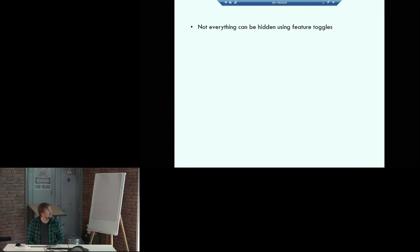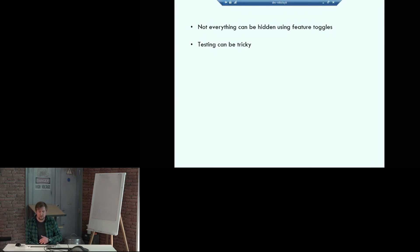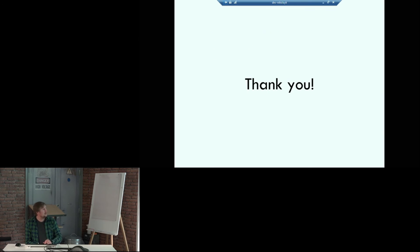Other thoughts: not everything can be hidden using feature toggles. Stuff like complex refactoring or large tasks which span across different areas of code may be challenging to hide from users behind a feature toggle. Testing can be tricky because with lots of feature toggles, it's not entirely obvious which tests to maintain and which combinations of feature toggles to test. And a cultural shift may be needed — something similar to Conway's Law. And that's it. Thank you. Any questions?